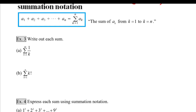Next we'll look at summation notation — a way to symbolically represent a series of numbers being added up. We use the Greek letter sigma to denote the sum; it's a capital S for sum in Greek. When we see sigma notation, we have an expression or formula as a function of some variable, usually k, with a starting value for k at the bottom and an ending value at the top. We say: the sum of a sub k from k equals 1 to k equals n.